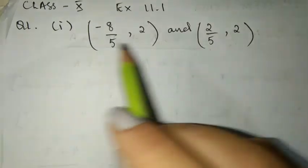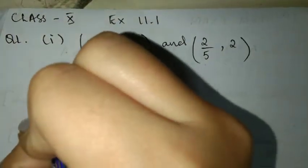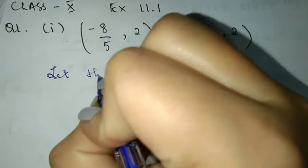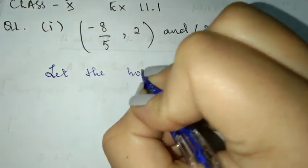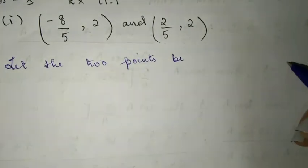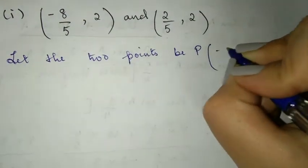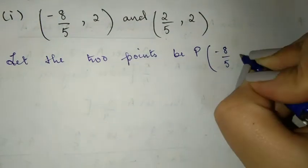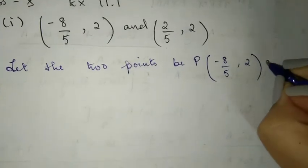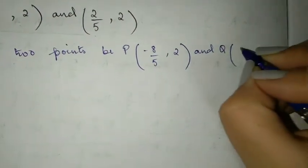So the first thing we should do here is write down what they've given us. Let the 2 given points be P and Q. P is at coordinates minus 8 by 5, 2 — and the other point is Q, which will be 2 by 5 and 2.